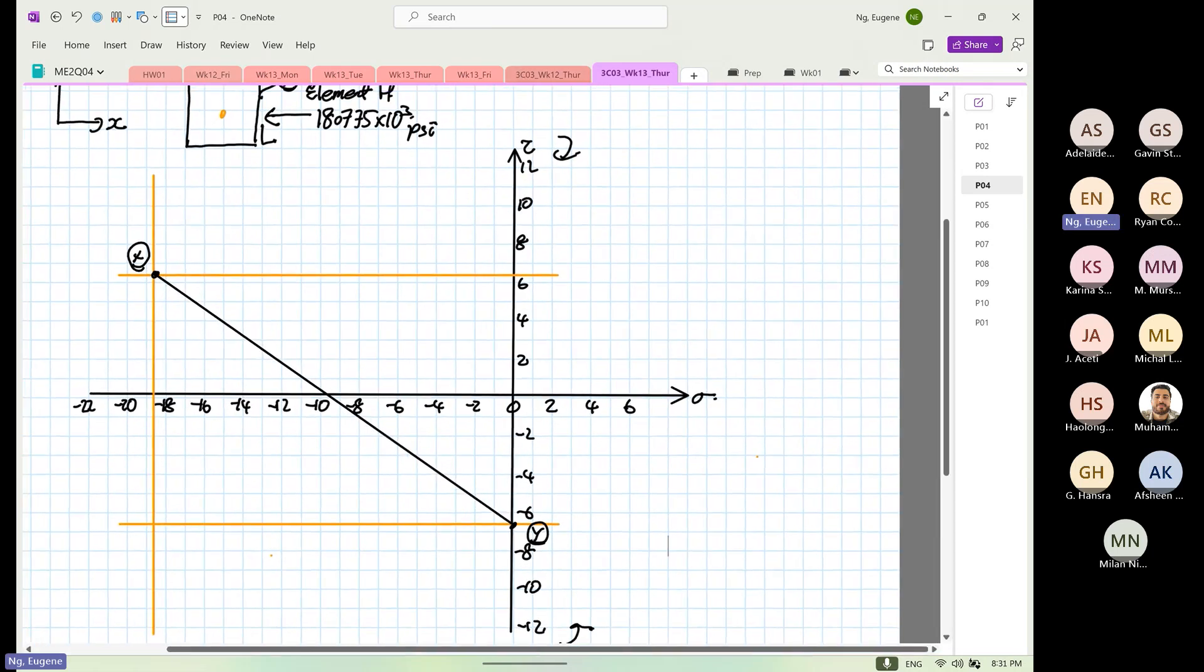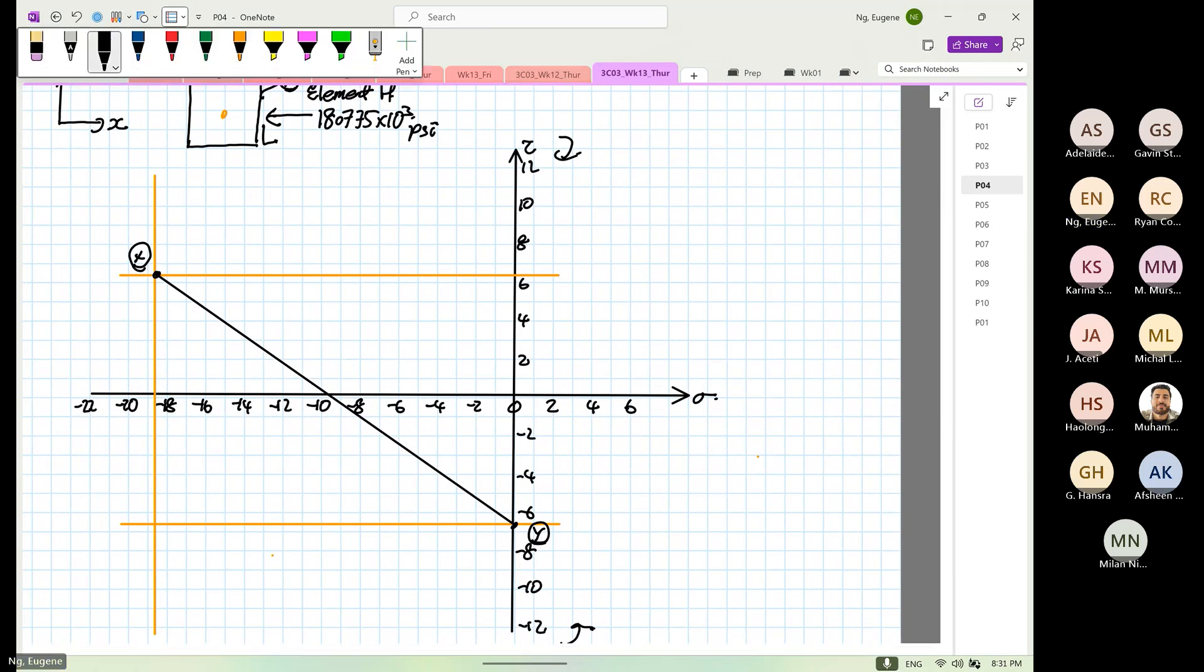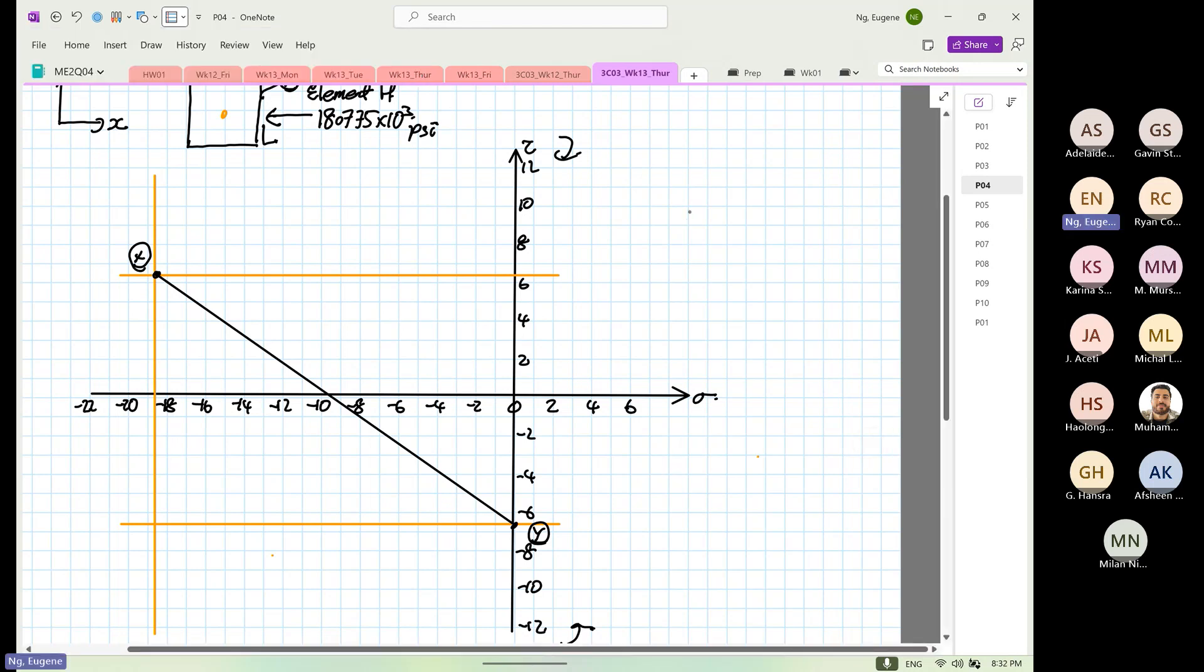So we are still going to calculate. No doubt we want to know the principal plane, but we also want to know what is the stresses acting at the optimum orientation. So stress 1.4. What do we calculate first? Radius of circle. No, radius of circle, center of circle.